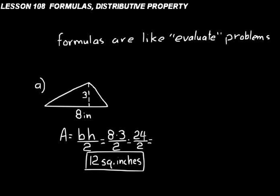Formulas are like evaluate problems. We just substitute the numbers in where the letters are in the formula. The one difference between a formula and an expression that we evaluate is that a formula has an equal sign, and it represents a particular thing — like A for area equals BH over 2, base times height over 2.